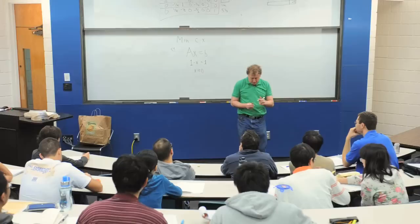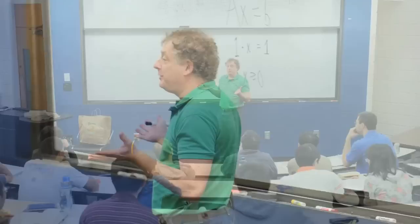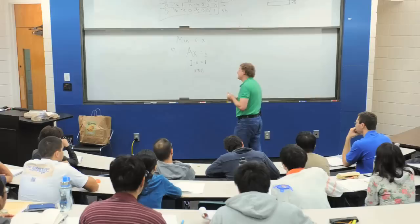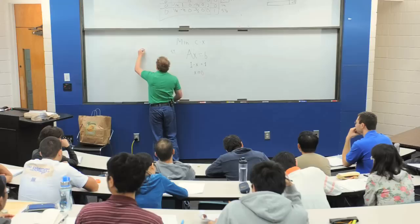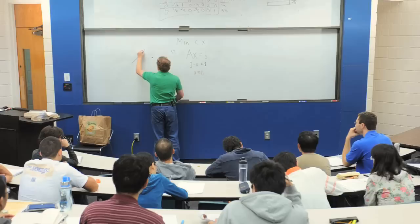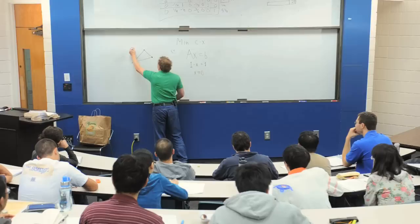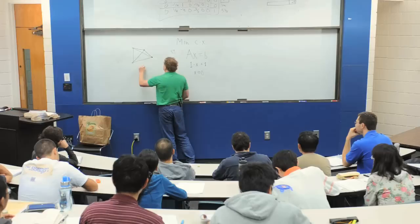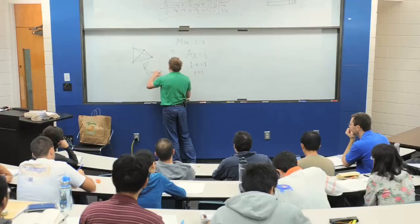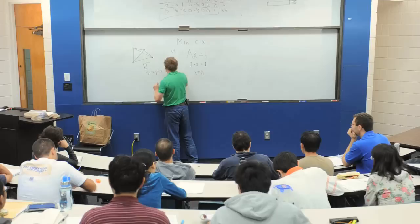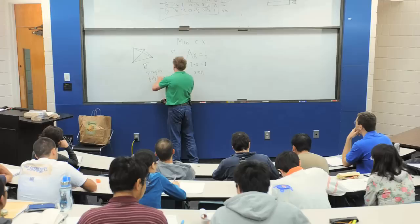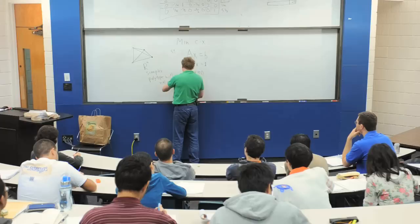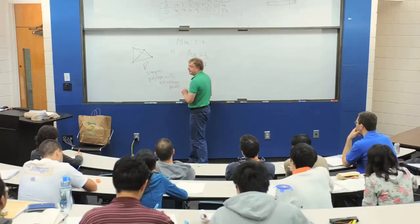Alright, so you may have wondered earlier in this course why the simplex method is called the simplex method, since we haven't even defined what a simplex is and yet we've already derived the simplex algorithm and proved that it works. So a simplex in two dimensions is a triangle. In three dimensions a simplex is a tetrahedron. In n dimensions a simplex is a polytope with n plus 1 extreme points.